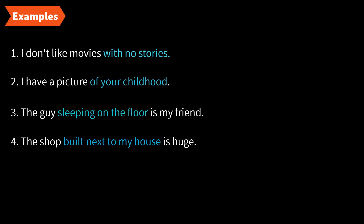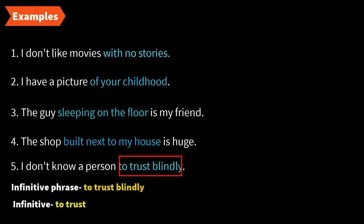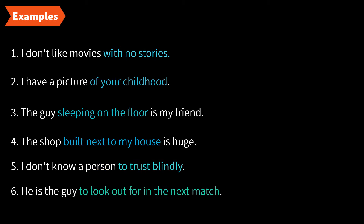Now let's look at adjective phrases starting with an infinitive. 'I do not know a person to trust blindly.' Here, 'to trust blindly' is an infinitive phrase starting with the infinitive 'to trust,' working as an adjective modifying the noun 'person.' Another example: 'He is the guy to look out for in the next match.' Here, 'to look out for in the next match' is an infinitive phrase modifying the noun 'guy.'